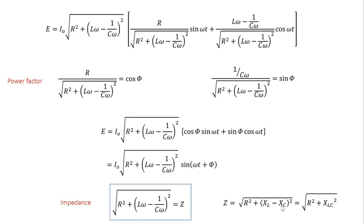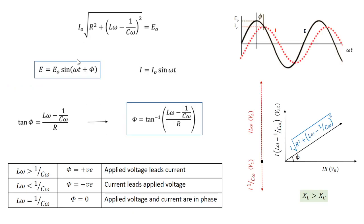In terms of reactance, Z = √(R² + (XL − XC)²). The EMF equation now becomes E = I₀ · Z · sin(ωt + φ). The constant term I₀ · Z is nothing but the peak current multiplied by the total resistance, which is the peak voltage E₀. So the EMF equation becomes E = E₀ sin(ωt + φ).